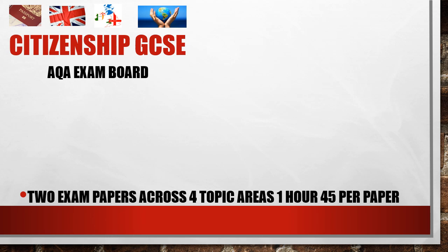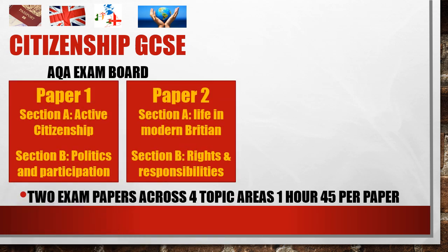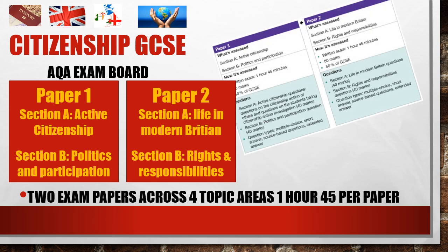Now let's have a little chat about the exam. The exam is basically made up of two papers — paper one and paper two. The first paper covers active citizenship and politics and participation. Active citizenship is a unit where you actually have to do things — you have to have done something active as a citizen, and we make time for that on the course. Then you'll have to write about it in the exam. Paper two has section A, which is life in modern Britain, and section B, which is your rights and responsibilities. It's assessed with equal weighting, so both papers have 50% of the GCSE with 80 marks each. There are different types of questions: multiple choice, short answer, source-based questions, and extended answer questions.